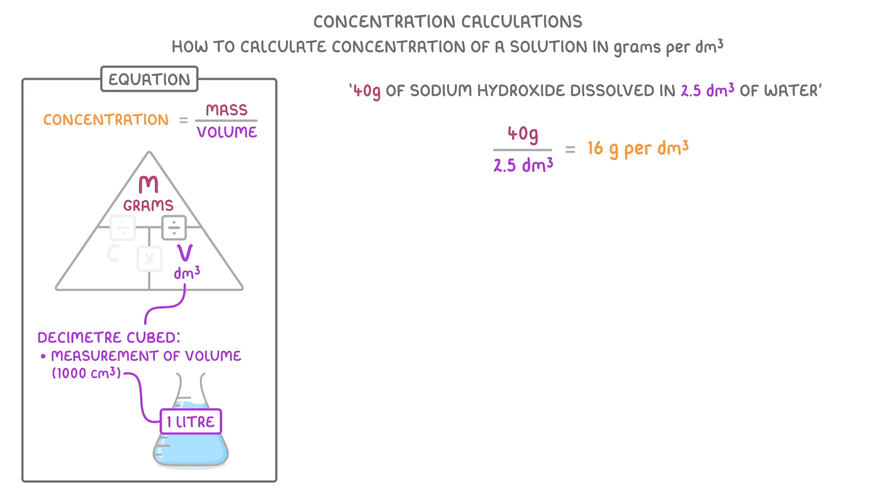And instead of writing per decimetres cubed every time, we can just write dm to the power of minus 3, as the minus here means the same thing as per.